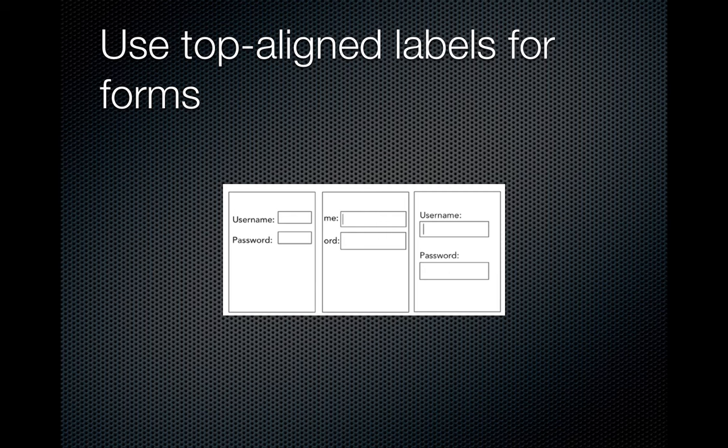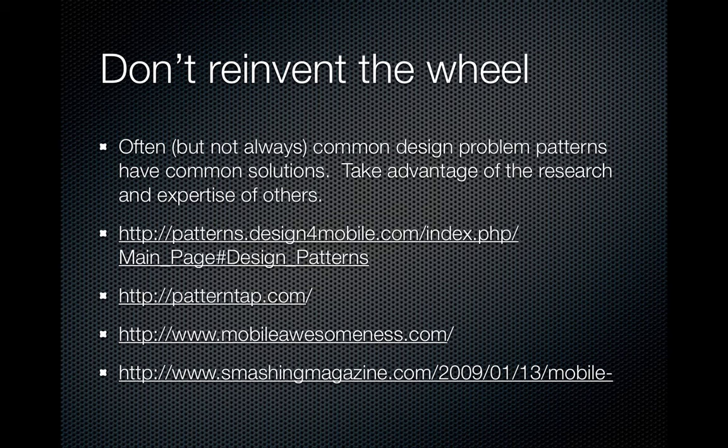The important principle is putting the most contextually relevant information above the fold — whatever is visible without scrolling — which is a much smaller area on mobile than desktop. Other considerations include using top-aligned labels for forms, since left-aligned ones often disappear when you zoom in on the field. Very simple things like that keep labels visible while you input data. And don't reinvent the wheel — common design problem patterns have common solutions, so take advantage of the research and expertise of others. There are links to popular mobile design solutions, but always keep a critical mind and think about why something worked and whether it applies to your context.